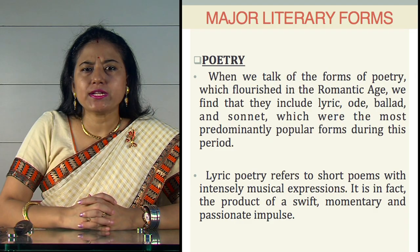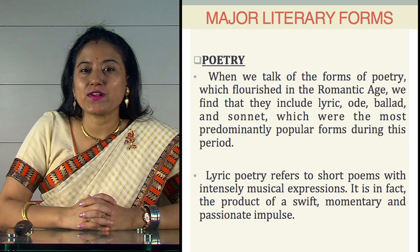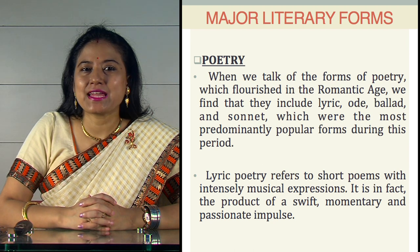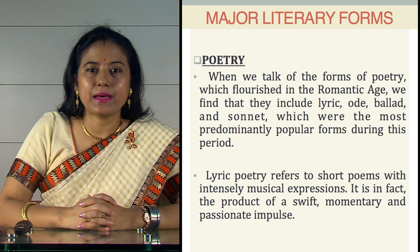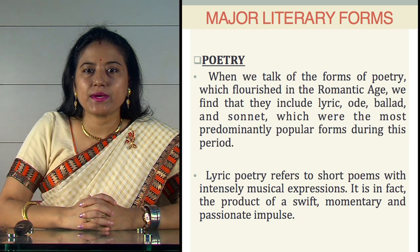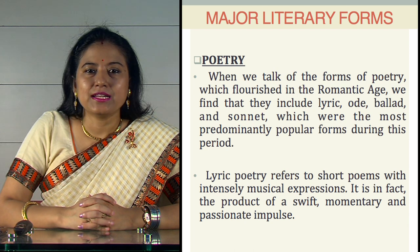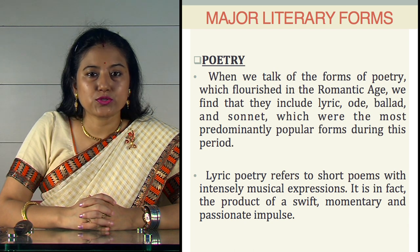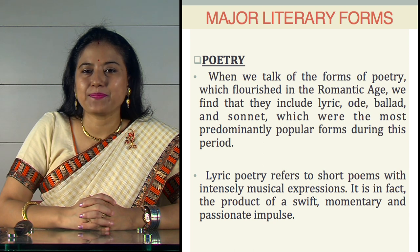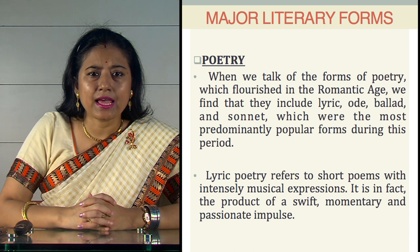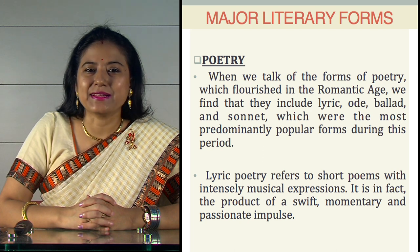Major literary forms, starting with poetry. When we talk about the form of poetry which flourished in the Romantic Age, we find that they include lyric, ode, ballad, and sonnet, which were the most predominantly popular forms during this period. Lyric poetry refers to short poems with intensely magical expression. It is, in fact, the product of a swift, momentary, and passionate impulse.